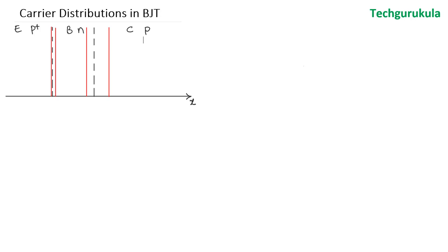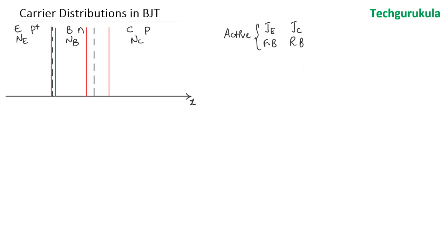The doping concentrations are N_E in the emitter, N_B in the base, and N_C in the collector. As we are discussing the active region of operation, the emitter junction is forward biased and the collector junction is reverse biased.